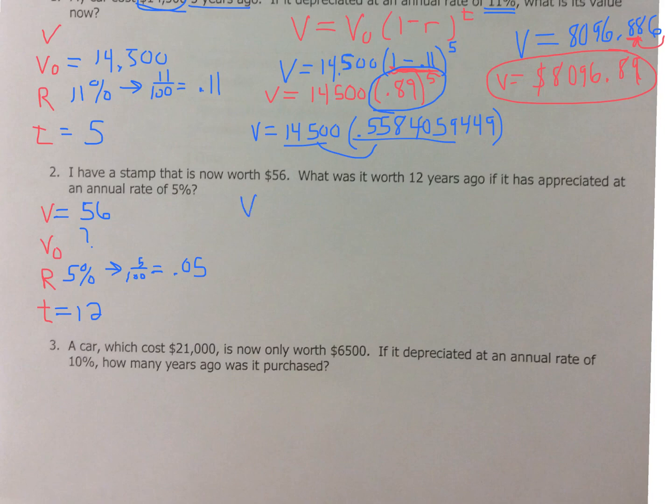Alright. So let's set up our equation. V equals V_O with 1. Now, again, because it went up in value, because it appreciated, plus R raised to the T. So let's fill in what we know. V, I know, is $56. V_O, I don't know. So that's my unknown. That's my variable. 1 plus the rate of 0.05. Raise that to the 12th. Now, let's start with the work inside the parenthesis. I can add that. So 56 equals V_O with 1.05 raised to the 12th.